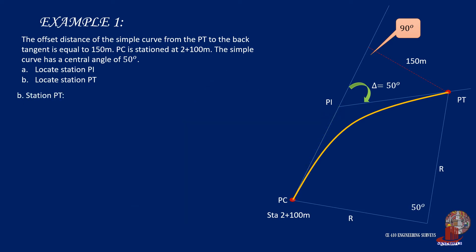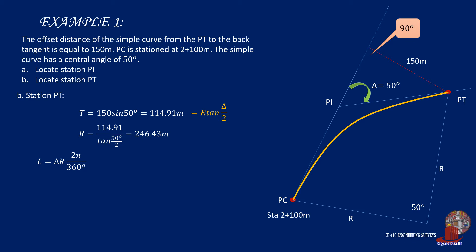For station PT, we need to identify the length of curve: L equals delta times R times pi over 360 degrees. Since we do not have R yet, from the computed value of T we use the standard formula T equals R tangent of delta over 2, giving R equal to 246.43 meters. Using delta of 50 degrees and R of 246.43 meters, the length of the curve comes out as 215.05 meters.